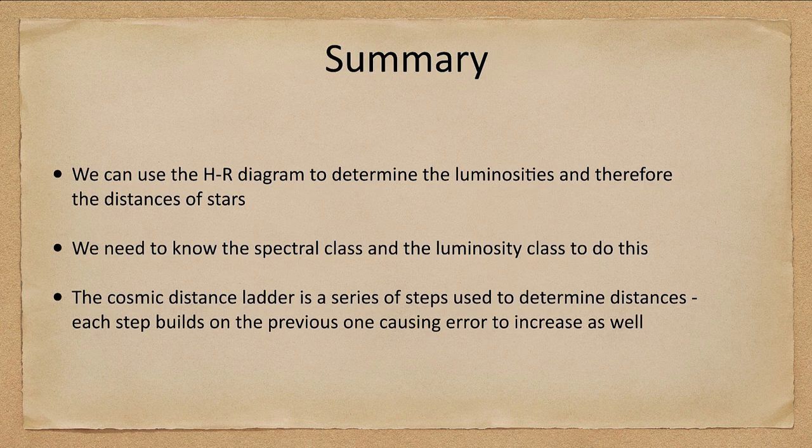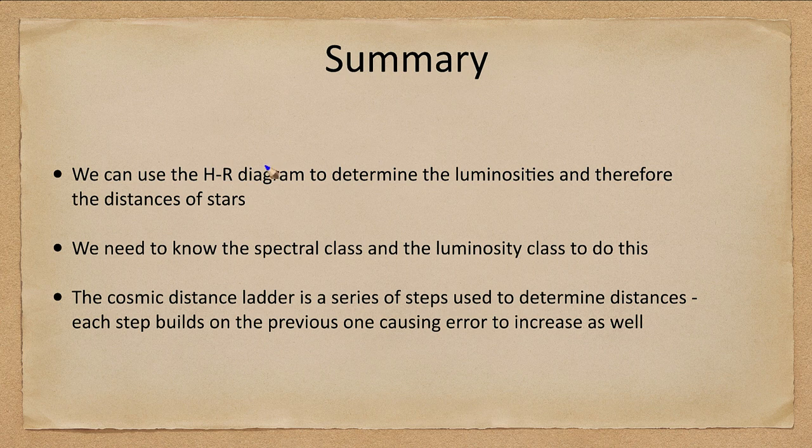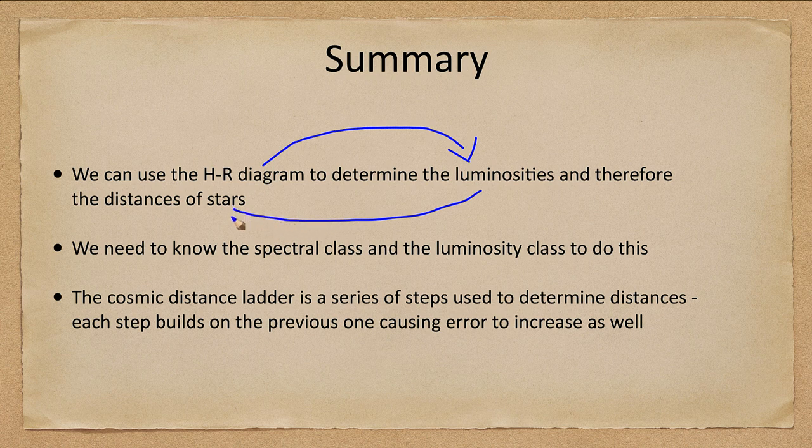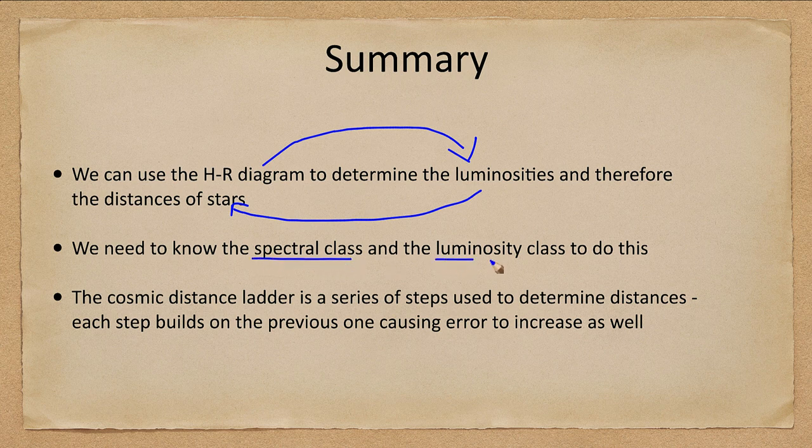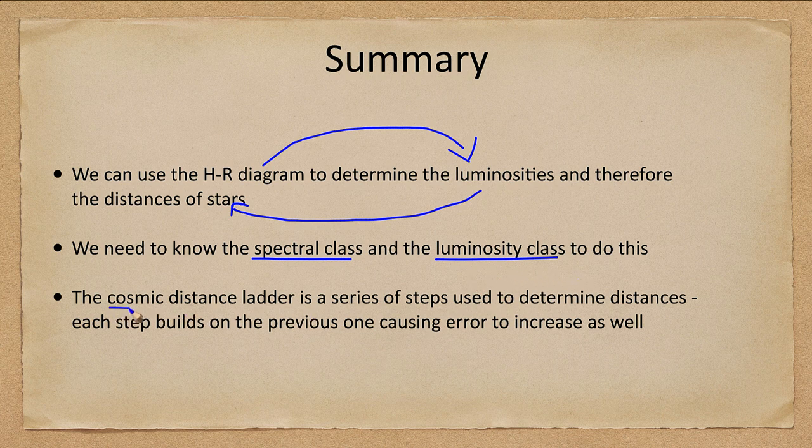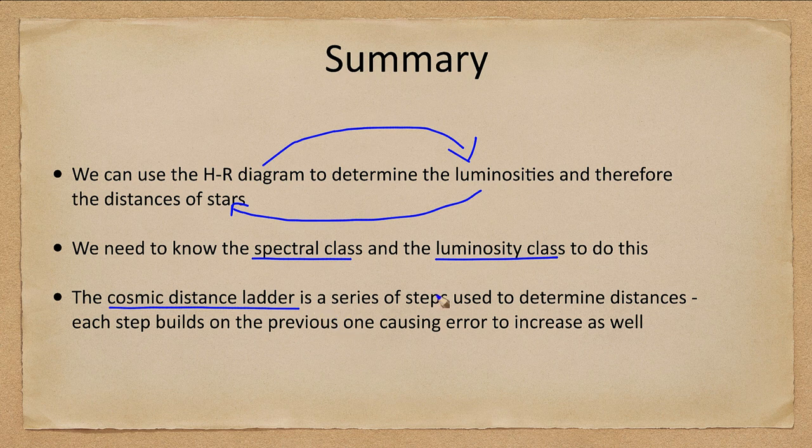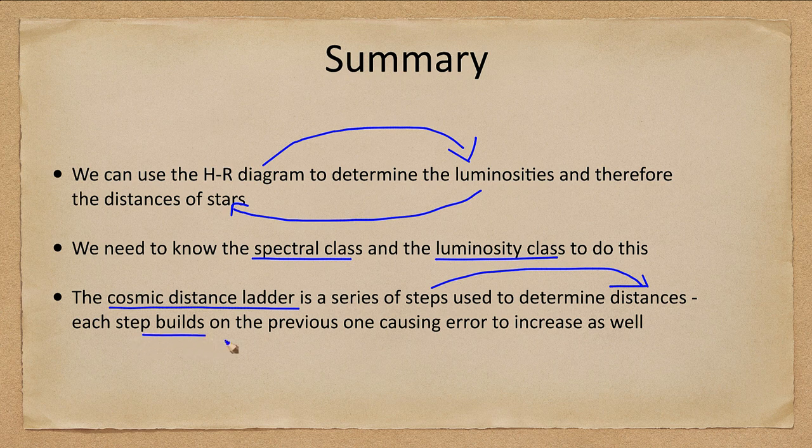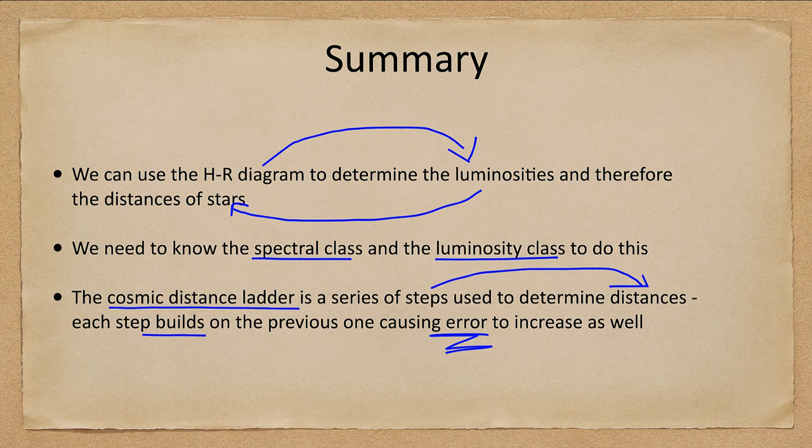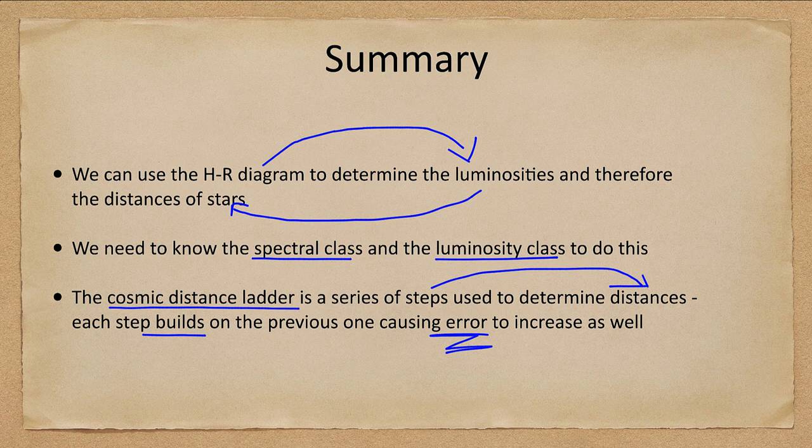Let's finish up with our summary. We can use the HR diagram to determine luminosities and therefore distances of stars. We need to know the spectral class and the luminosity class - it's a two dimensional spectral classification. We talked about the cosmic distance ladder as the steps used to determine those distances. But each step is built on the previous one causing the errors to increase as well. So we need very accurate measurements in the very beginning steps to make sure we do not have tremendous errors in the later steps.